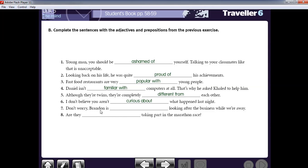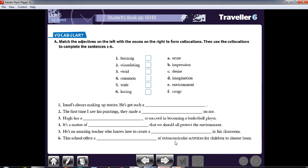Number seven. Don't worry, Brandon is capable of looking after the business while we are away. Brandon is clever enough to look after the business. So he is capable of. Number eight. Are they serious about taking part in the marathon race?